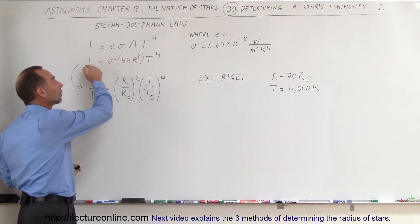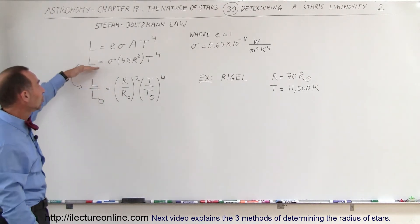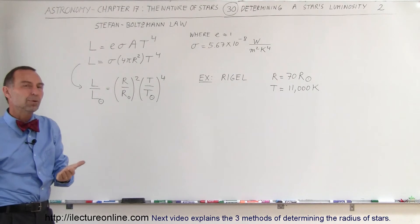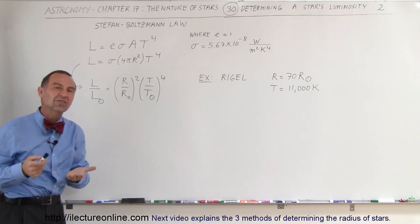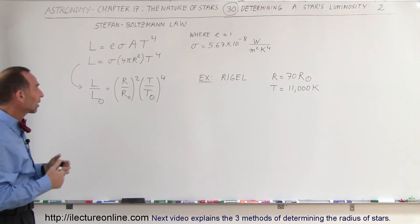Using the constant here, we can actually find the actual output of the sun or output of any star. For example, the luminosity of the sun is 3.9 times 10 to the 26 watts. And that's how much energy the sun puts out on a second-to-second basis.